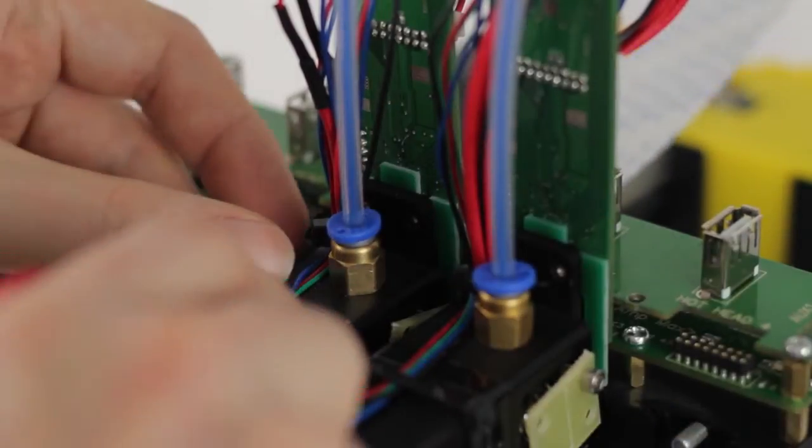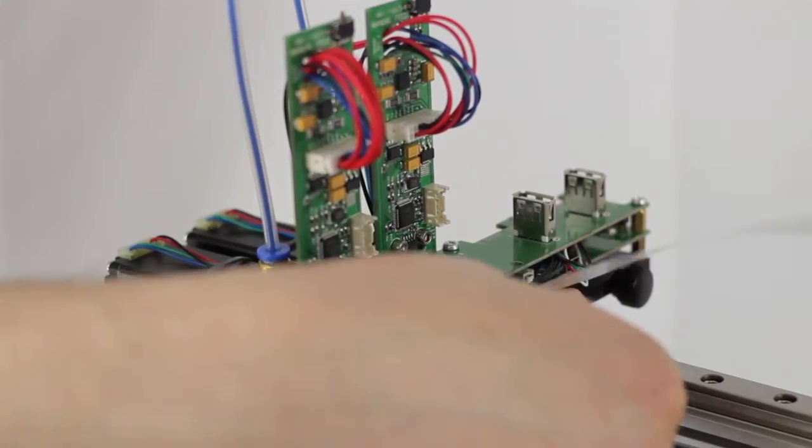Gently press down on the body of the printhead until it makes contact with the bed. Then re-tighten the set screw.